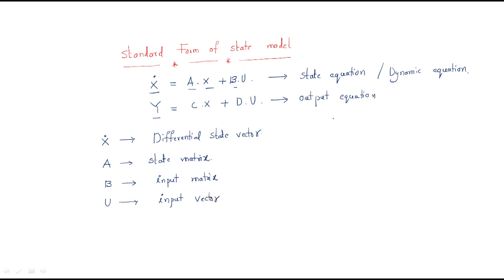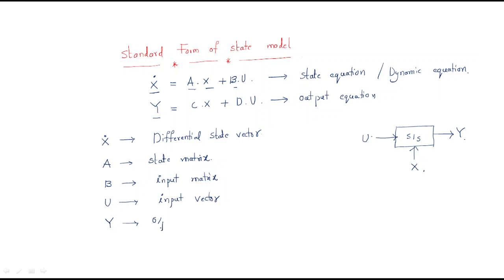Keep in mind: in state space analysis, the input is always denoted U, the output is always Y, and the state of the system is represented by X. Don't confuse these. X represents the state of the system, and Y is the output vector.